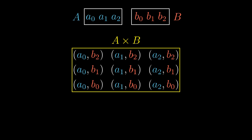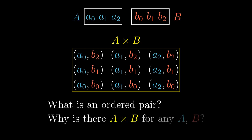In particular, we are going to answer the following questions. What is formally an ordered pair and how to construct a Cartesian product using axioms? Let's go.